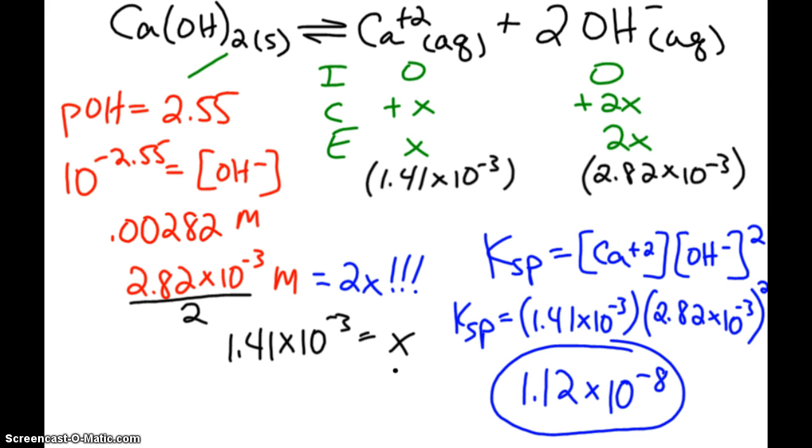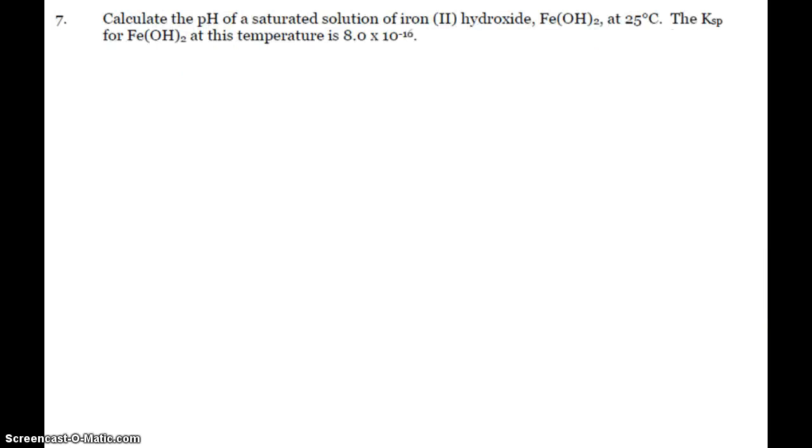Okay, so again, because there's two hydroxides, when I find the hydroxide concentration using my pOH, that is representing 2X. That's the big concept there. Same concept with this question: Calculate the pH of a saturated solution of iron 2 hydroxide, and we have our Ksp.